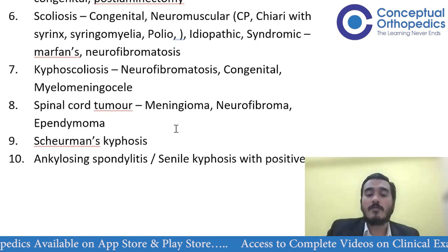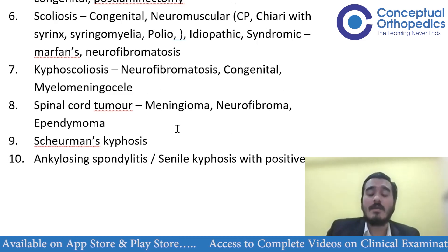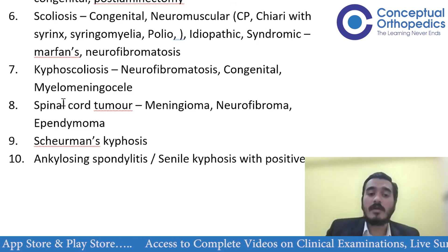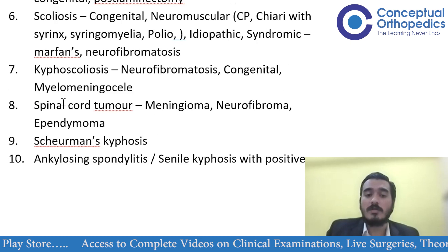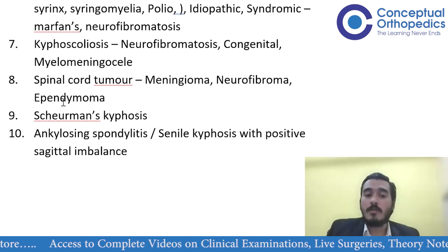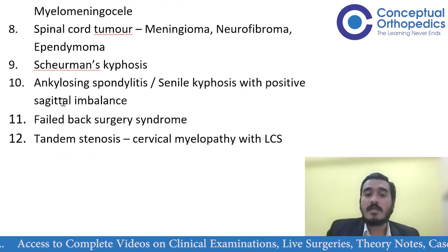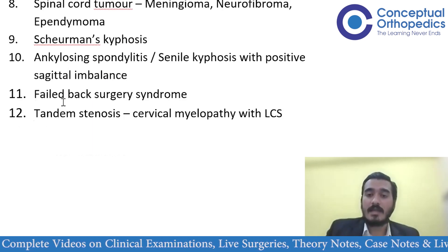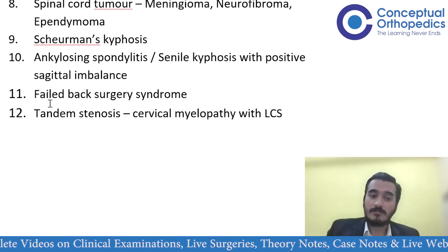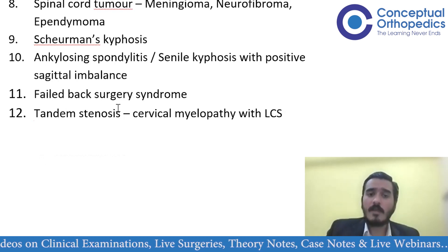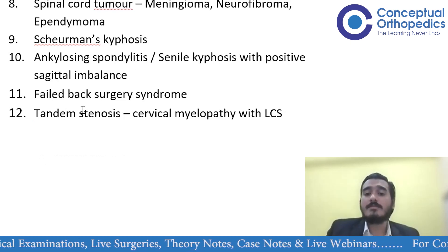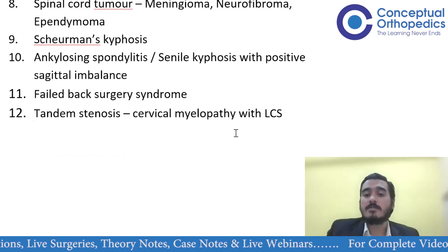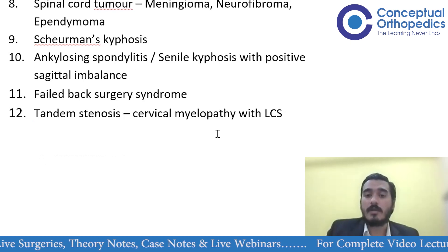Spinal cord tumors of different types may rarely be asked. If no other case is available, they may present a tumor. Scheuermann's kyphosis, ankylosing spondylitis, and senile kyphosis may also be encountered.